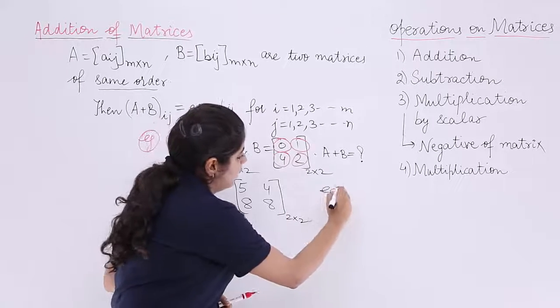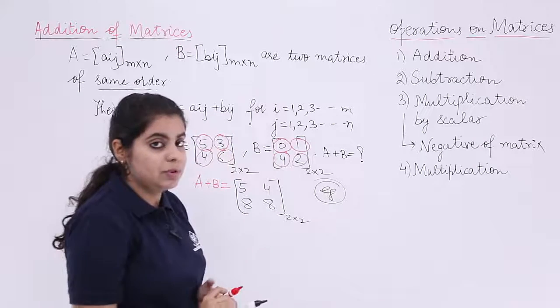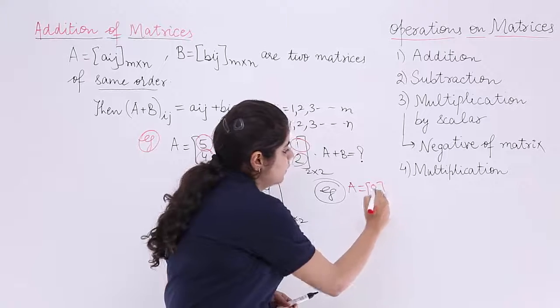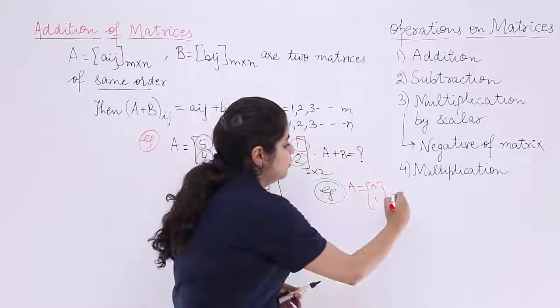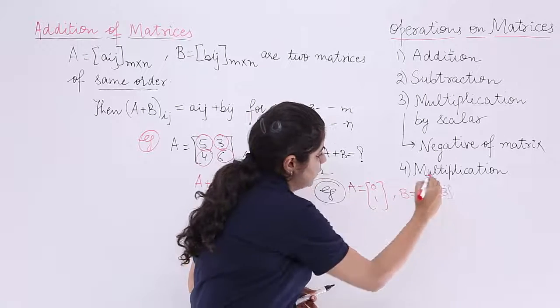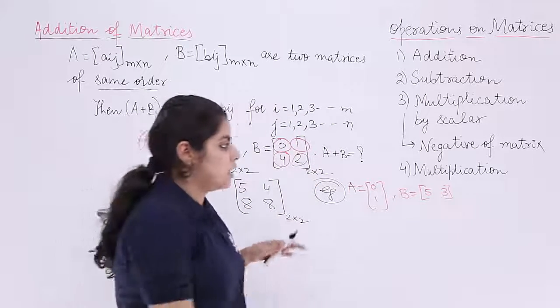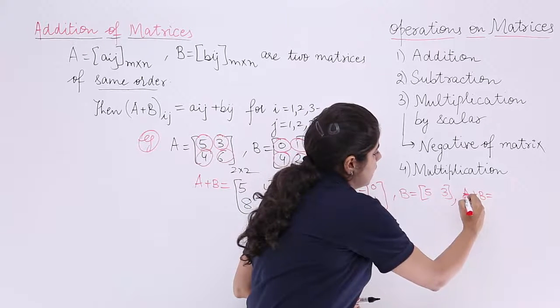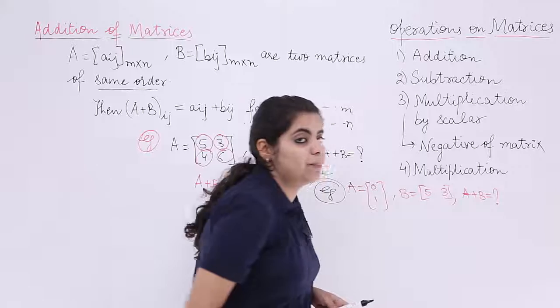I have example number 2. I have been given a matrix A as [0; 1] and another matrix B as [5, 3], and the question is asking me to find what is the resultant matrix in the order of A plus B.